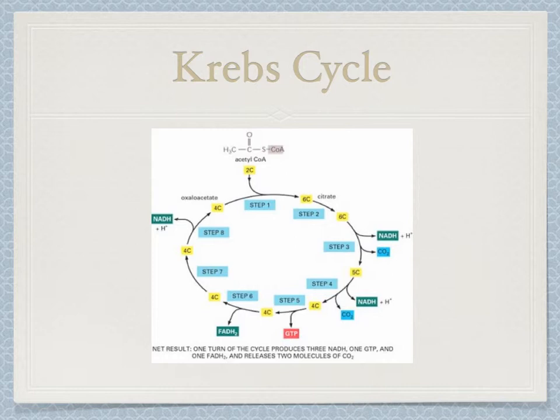Now that you have a 5-carbon molecule, the process will start over, adding one ADP molecule in the process. This 4-carbon molecule then converts FAD to FADH2 and NAD+ to NADH, to then regenerate oxaloacetate. This entire process occurs twice. The net yield of the Krebs cycle is 2 ATP, 6 NADH, 2 FADH2, and 4 CO2 as a byproduct.